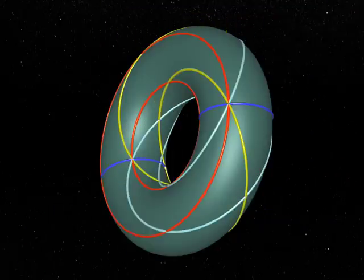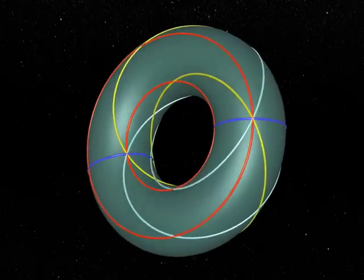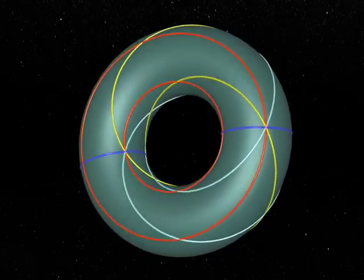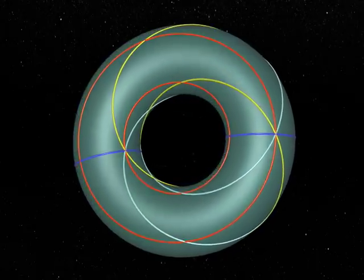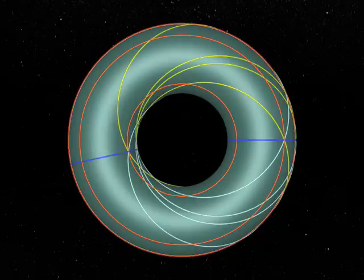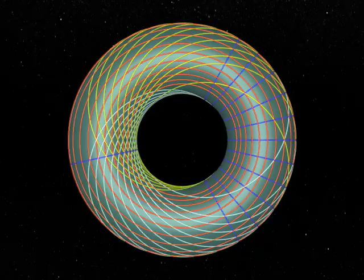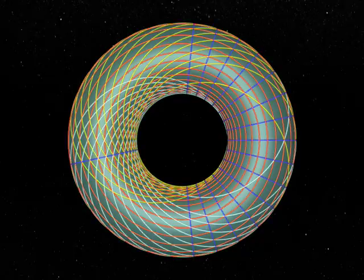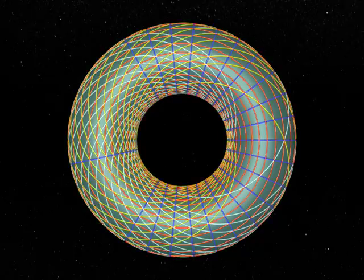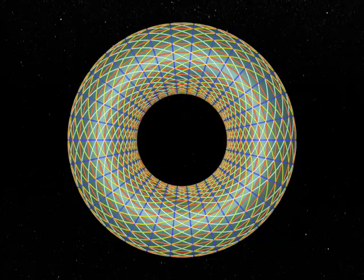Two circles of the same family do not intersect. A blue circle intersects a red circle in a single point. A yellow circle and a white circle intersect in two points. These are Villarsault circles.